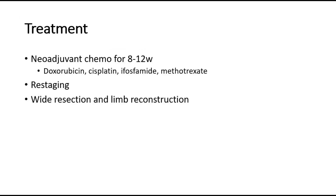For treatment of osteosarcoma, the principal first-line chemotherapy agents are doxorubicin, cisplatin, ifosfamide, and methotrexate. These drugs are used for neoadjuvant chemotherapy for around 8 to 12 weeks. After restaging to evaluate the response to chemotherapy, provided the tumor is resectable and there are no skip lesions, surgery can be performed with wide resection and limb reconstruction.